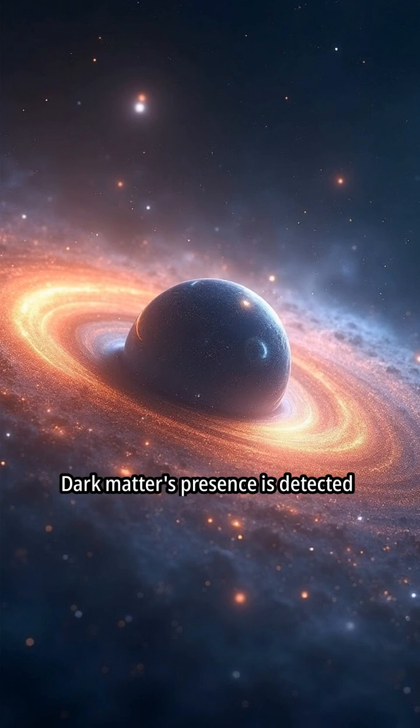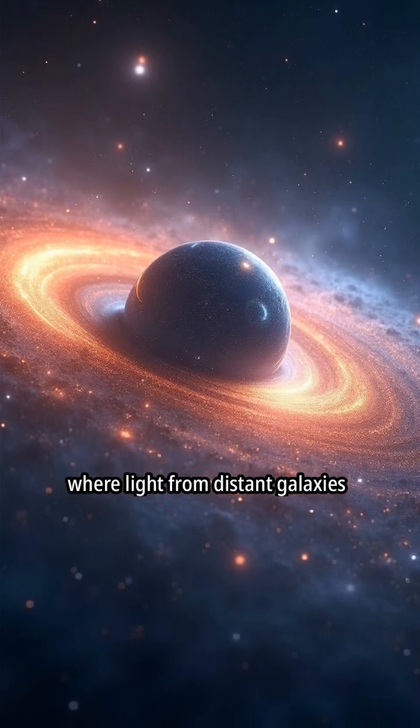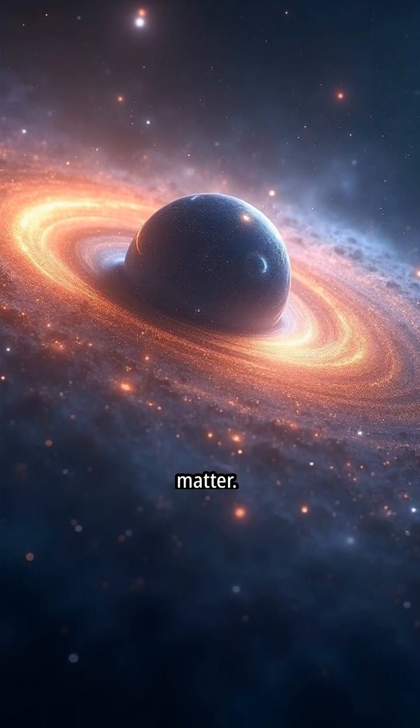WIMPs and axioms. Dark matter's presence is detected through gravitational lensing, where light from distant galaxies is bent and distorted by the gravity of intervening dark matter.